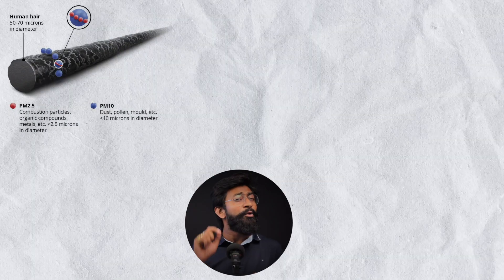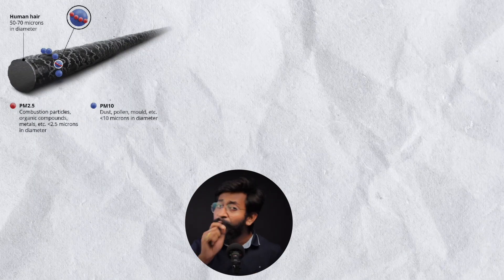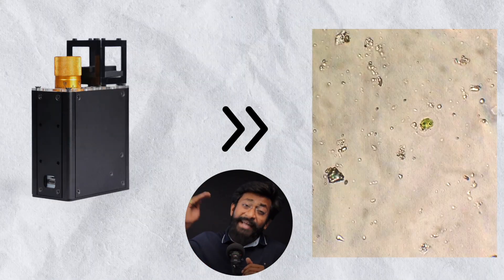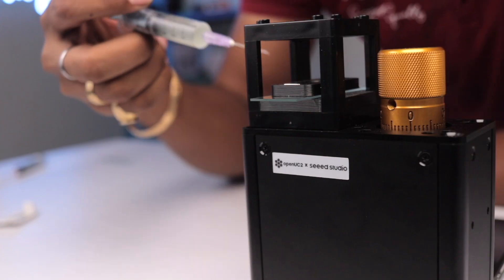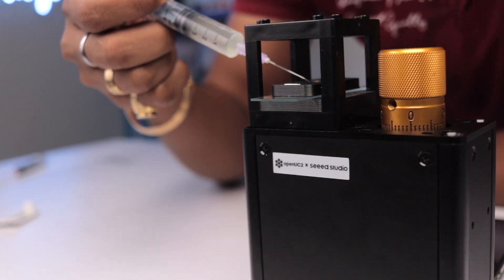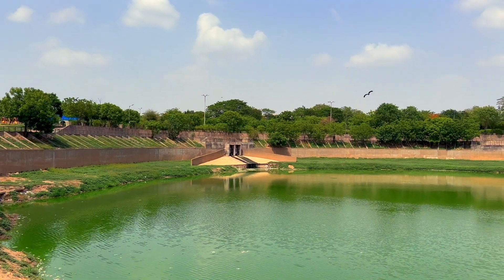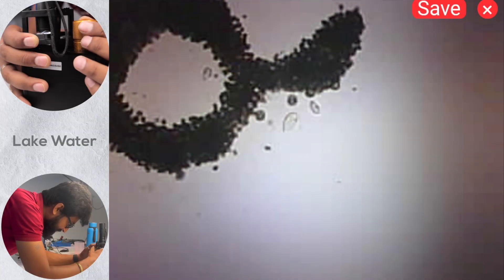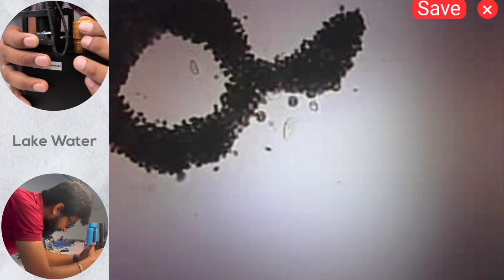Just to give you a rough idea, a human hair is around 70 micrometers wide. So this microscope can detect particles which are 18 times smaller than a human hair. That's seriously impressive for something so compact and affordable. Today in this video, we'll be checking out this microscope by trying out different samples and we'll see some interesting particles that we cannot see through our naked eyes.